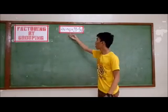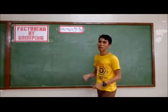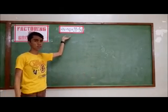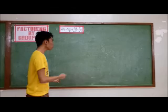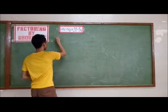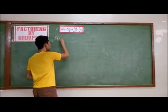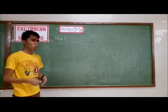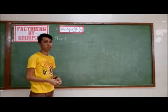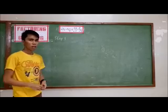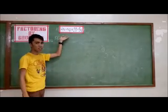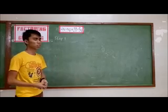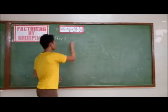For the first example, we have 4x minus xy plus 20 minus 5y. What do you think are the factors of this expression? Step 1 is to create smaller groups within the expression. Let us think which terms can be grouped together. As we can see, the first and second terms have a common variable which is x, so we can group them together.